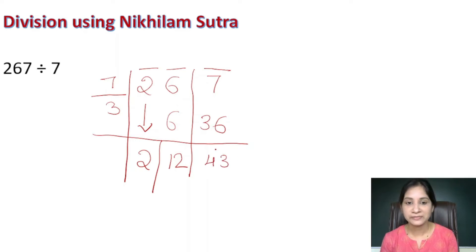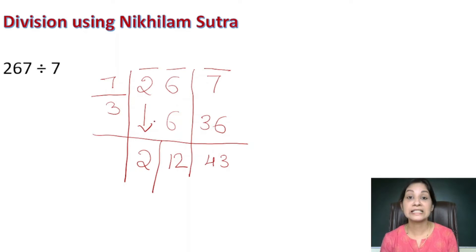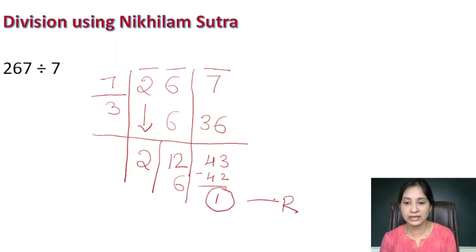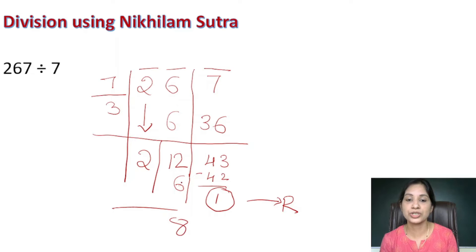The remainder 43 is more than the divisor 7, so we can deduct multiples of 7 from 43. 7 times 6 is 42, so 6 goes to the quotient part and the actual remainder is 43 minus 42 equals 1. The final quotient is 2 plus 6 equals 8 in the units place, and the tens digit is 3, giving quotient 38 and remainder 1.